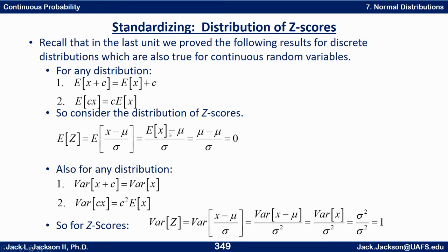The expected value of the top is the expected value of x plus a negative mu. But the expected value of x is mu, so mu minus mu is 0, divided by sigma is 0. So what this is saying is that if you take z-scores for any distribution and look at the distribution of the z-scores rather than the original x's, that distribution will have a mean of 0.